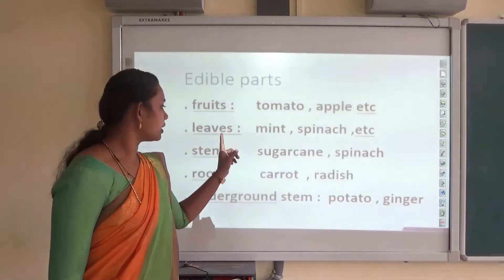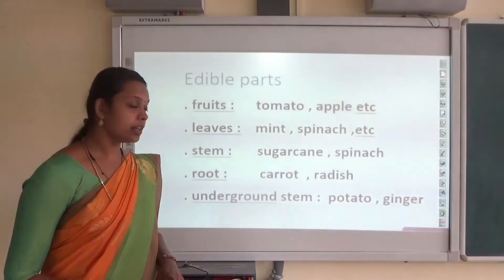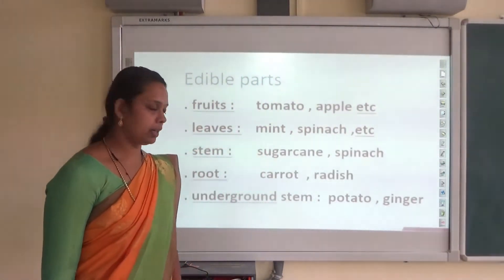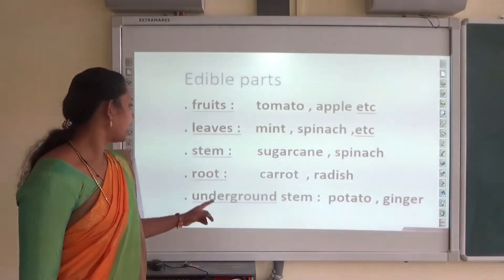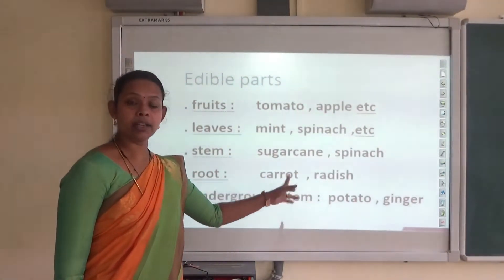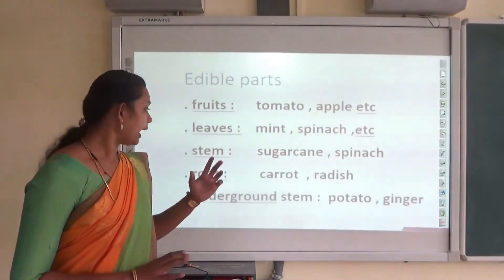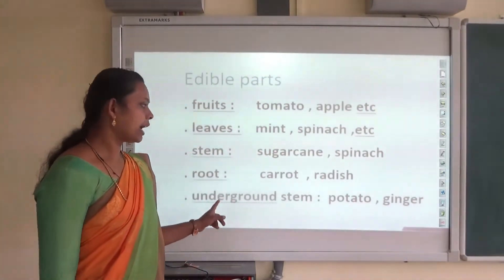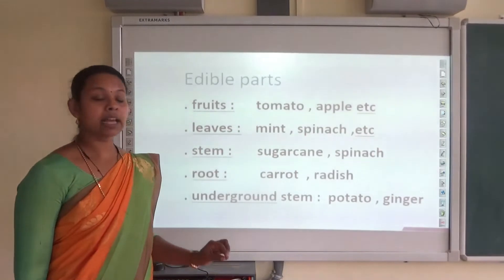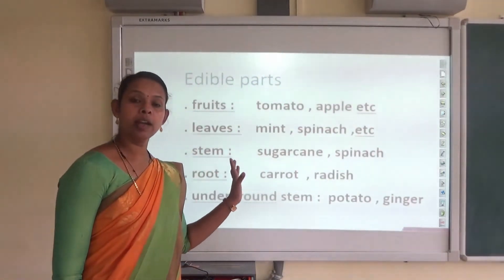In the case of sugarcane, spinach, etc., its stems are edible. And roots of carrot, radish are edible. And in the case of potato and ginger, its underground stems are edible.